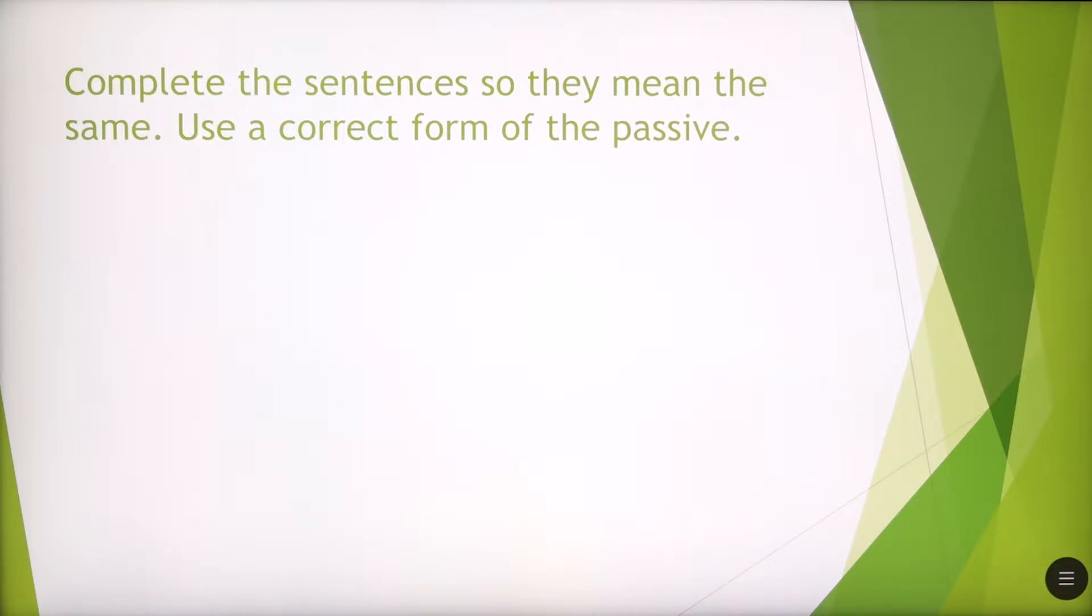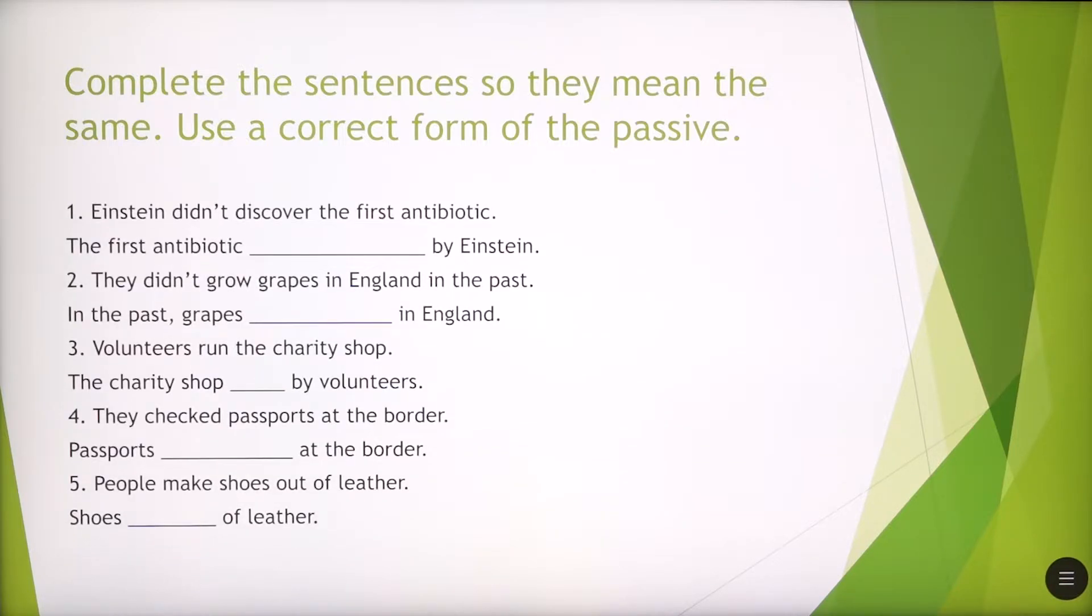Complete the sentences so they mean the same. Use a correct form of the passive. So we've got some sentences here with certain gaps that you have to fill them by using the passive voice as we've learned during this chapter. Einstein didn't discover the first antibiotic. The first antibiotic, you've got a gap here and then by Einstein. How would you use the passive in this case? The first antibiotic wasn't discovered by Einstein.